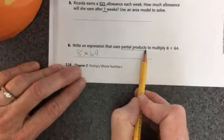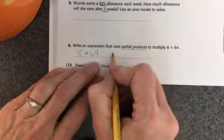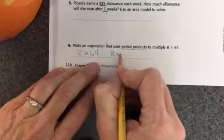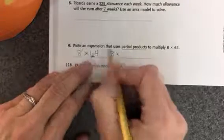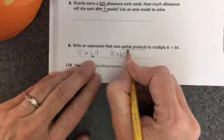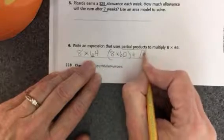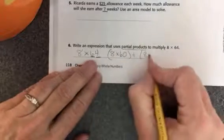It's basically saying take the number 8 and multiply by the value of the 6, multiply by 60, and then take the 8 and multiply by the value of the 4.